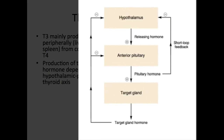Thyrotrophin-releasing hormone, or TRH, is secreted in the hypothalamus, stimulating the release of thyroid-stimulating hormone, or TSH, from the anterior pituitary gland into the systemic circulation. In turn, TSH stimulates the release of T3 and T4 from the thyroid gland, as well as stimulating the peripheral conversion of T4 to T3. This mainly occurs in the liver, spleen, and kidneys.